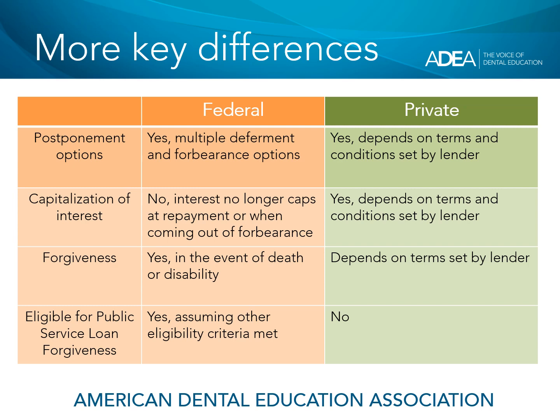A few more key differences between federal and private loans. Regarding postponement options, there are a number of ways you can postpone payments with federal loans through deferment and forbearance. With private loans, you will likely be able to postpone payments, but that depends on the terms and conditions set by the lender, and in some cases you may actually pay a fee to postpone with a forbearance option. Regarding capitalization of interest, this is where the loan servicer takes the interest that's built up and adds it back to the original amount borrowed. Very good news on federal loans: effective July 1, 2023, interest will no longer capitalize at repayment or when you come out of forbearance. With private loans, you can expect interest to capitalize, depending on the terms and conditions set by the lender.